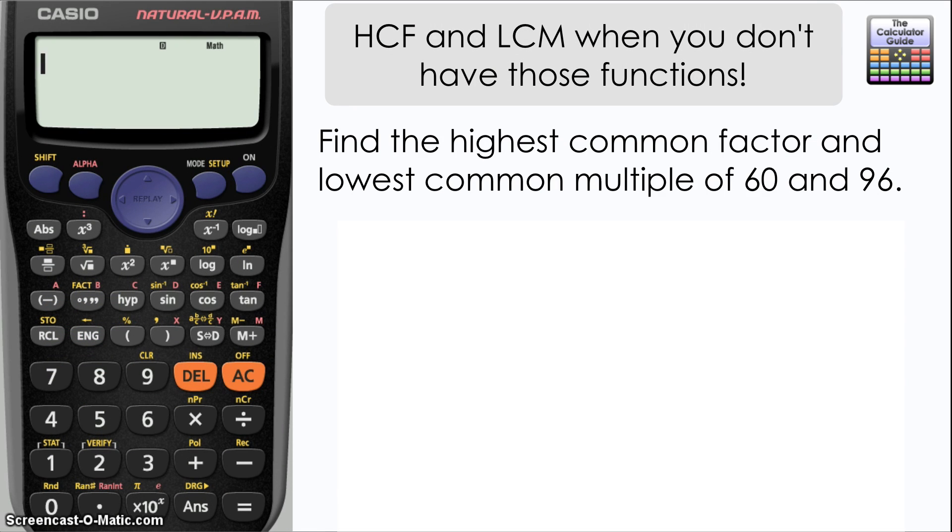We're going to find the highest common factor and the lowest common multiple of 60 and 96. We're going to start by inputting those digits as a fraction, 60 over 96, and the calculator will simplify that for us to 5 eighths. Now what we're going to do is compare these two fractions that we have here.